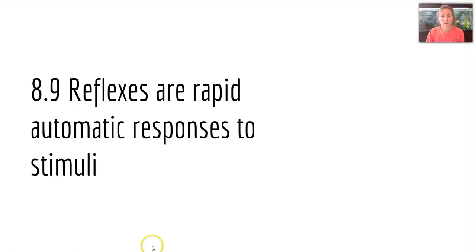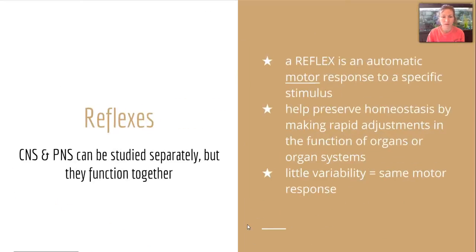Hey guys, Carlson here to go over Lecture 4 of Chapter 8, our very last one. We're going to start off with section 8-9, which covers reflexes — rapid automatic responses to stimuli. We've been studying the central and peripheral nervous systems separately, but they do function together, and part of what they do together is form our reflexes.